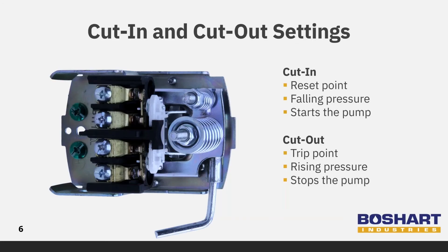All pressure switches have two operating points known as the cut-in and cut-out. The cut-in point, also known as the reset point, is a result of falling pressure and starts the pump. The cut-out point, also known as the trip point, is a result of rising pressure and stops the pump.